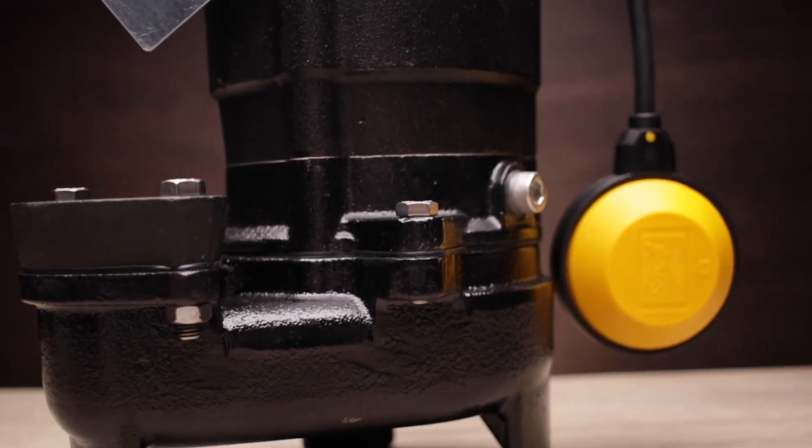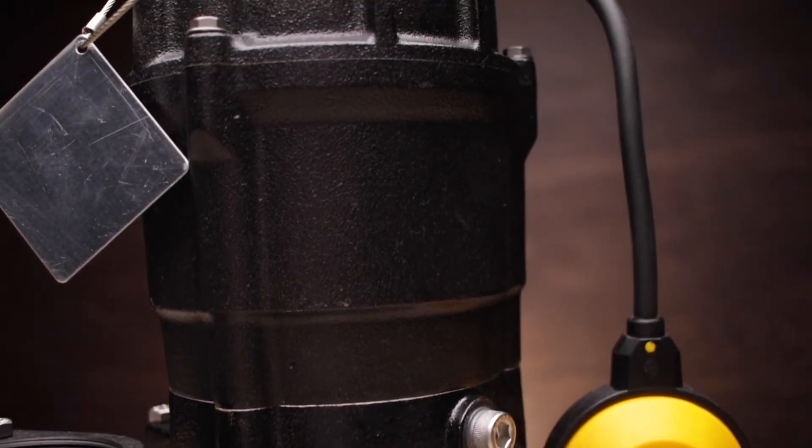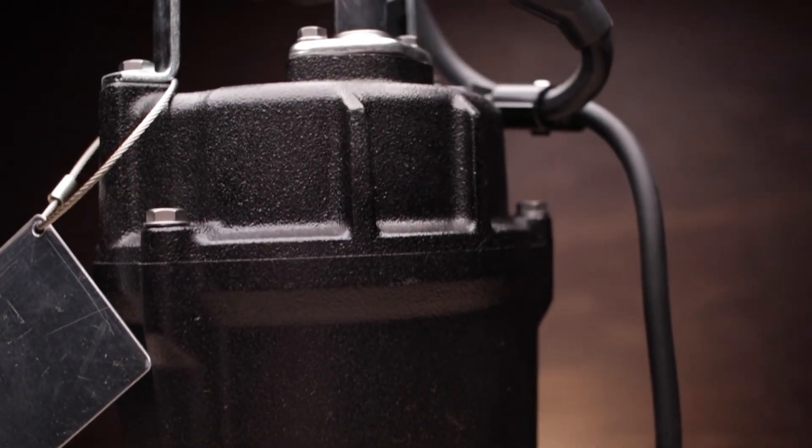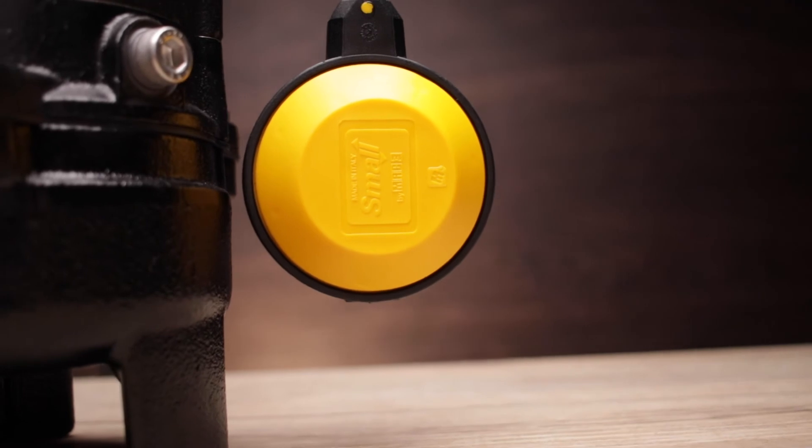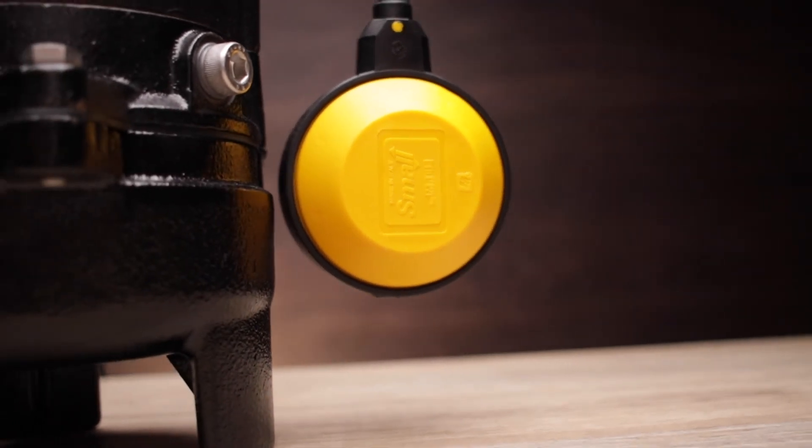If you need an automatic solution, the Tsurumi 50 UT Z 2.4S comes with a built-in float switch to turn the pump on and off without requiring any human interaction. Tsurumi also designed a one-horsepower version of the 50 UT for those installations that require a little more push.